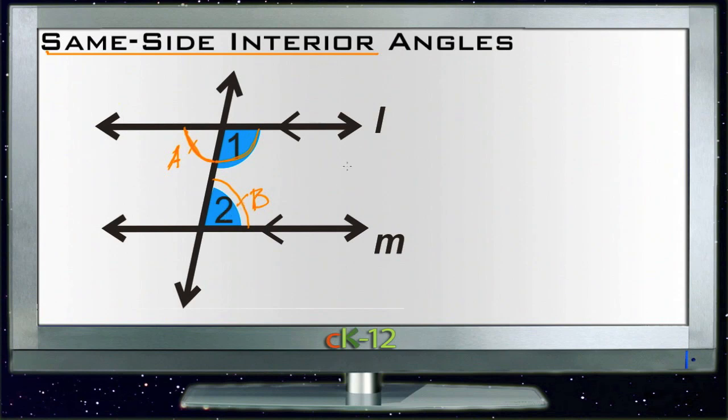So that tells us that if you have same-side interior angles, in this case angle 1 and angle 2, and you add them together, they will always equal 180 degrees if your two lines are parallel.